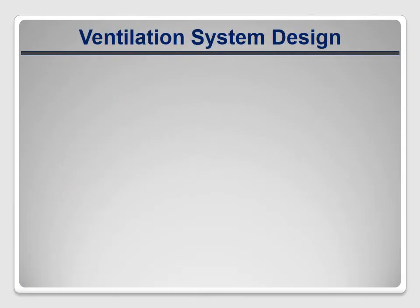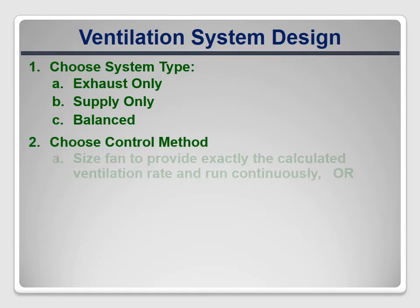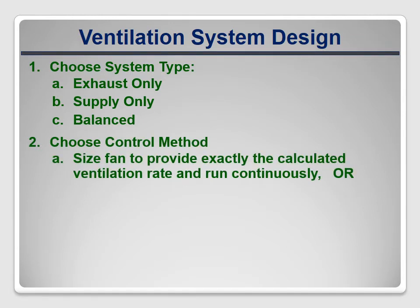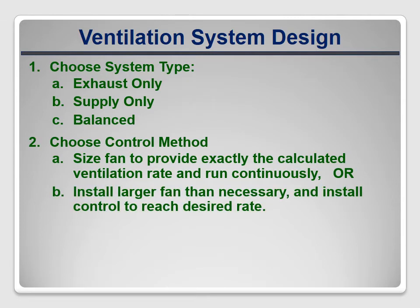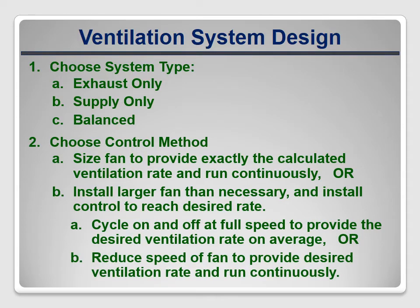When a system needs to be installed, there are two main decisions to make. The first is what kind of system will it be — exhaust only, supply only, or a balanced combination of the two? The second decision is what type of control method will be used. Will the fan be sized to provide exactly the desired flow rate and run continuously, or will the fan be oversized and then either cycled on and off to get the correct average rate, or run at a reduced speed to provide the desired rate? These are important decisions and the rest of this lesson will describe some of the practical considerations related to the possible options.